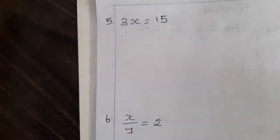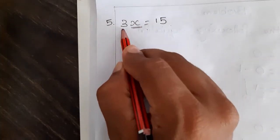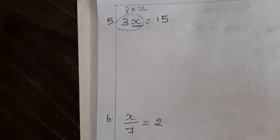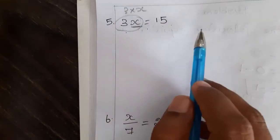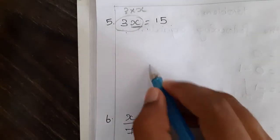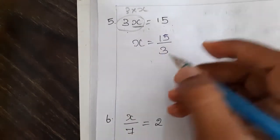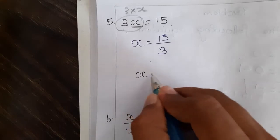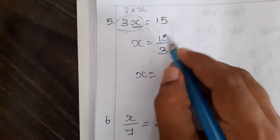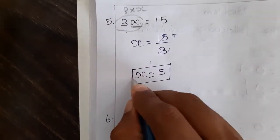Next problem: 3x is equal to 15. Our aim is to find the value of x. But 3 is in operation — 3 into x, so 3 is multiplied. If you transpose to the next side, RHS, it will become a division. So x is equal to 15 by 3. We can simplify: 5 times 3 is 15, so the value of x is 5.